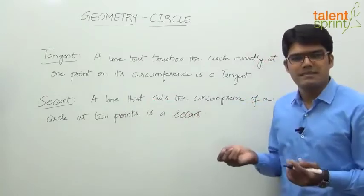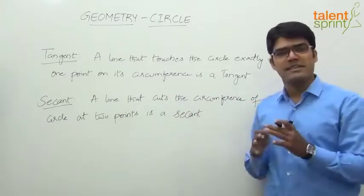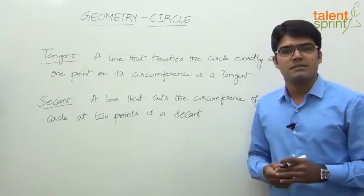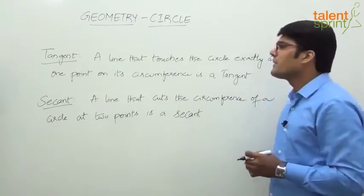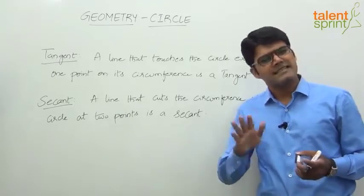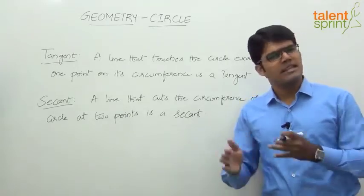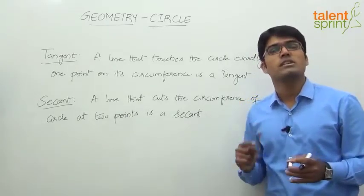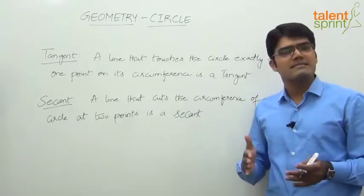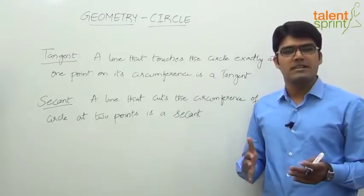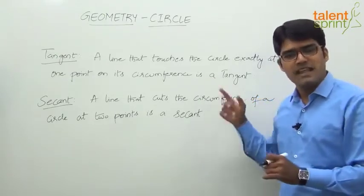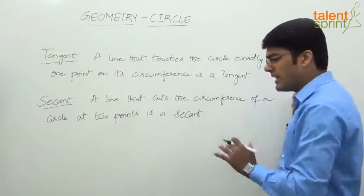These basic definitions are not required to be learned by heart if you understand the concept — that is more than enough. A tangent is a line that touches the circle exactly at one point on its circumference, touching only at one point. A secant is a line that cuts the circumference of a circle at two points.